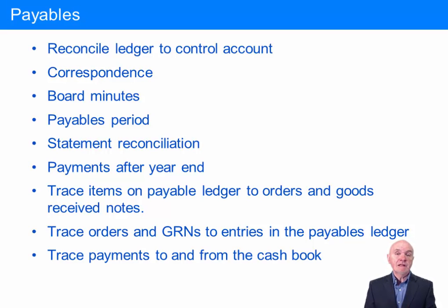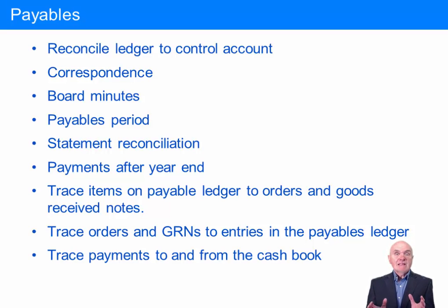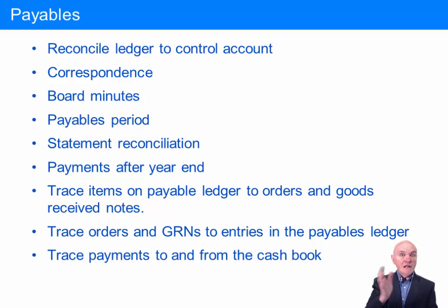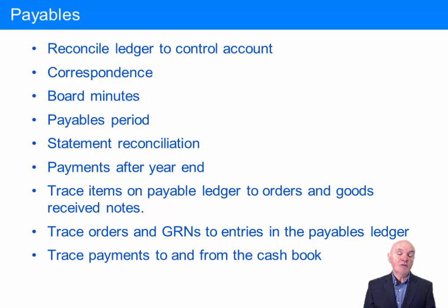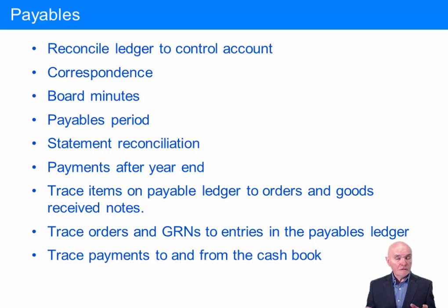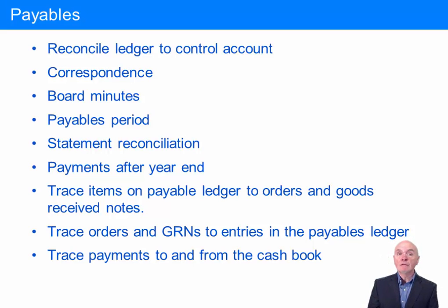Payables period — this is the analytical procedure you'd look at here. If the payables period in both years is about 40 days, that gives you some satisfaction that payables are probably right. But if payables days were to decrease substantially, you have to wonder why. Why are we suddenly paying these people far earlier this year than previously? The real fear is not just that we're paying earlier, but that the payables period has fallen because we have left out some payables and the reported payables balance is too small.